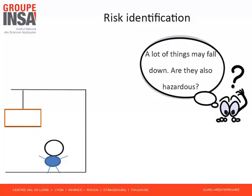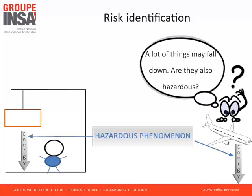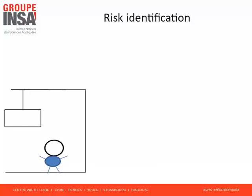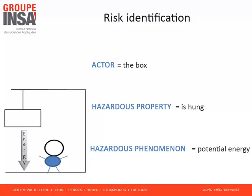A lot of things may fall down — are they also hazardous? Yes. For instance, when an aircraft is flying, a crash may occur. In such a situation, the actor is the aircraft, and 'is flying' is a hazardous property. The hazardous property of the aircraft and the property of the box are different. However, they assign to these two actors a common hazardous phenomenon: potential energy. Potential energy is a specific hazardous phenomenon — any object which possesses potential energy is possibly dangerous. To summarize, three features were introduced: the first is called an actor (the box is an actor), the actor has a hazardous property (the box is hung), and this property assigns a hazardous phenomenon to this actor (because it is hung, the box has potential energy).